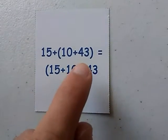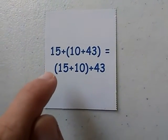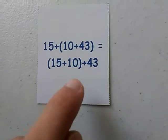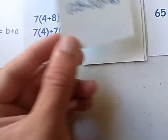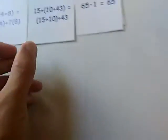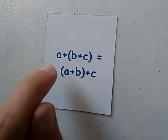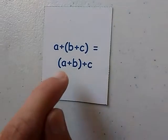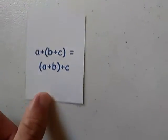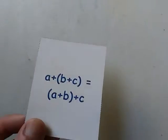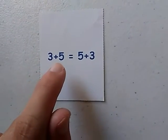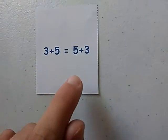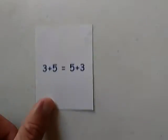10 plus 43 plus 15 equals 15 plus 10 plus 43. B plus C plus A equals A plus B plus C — this is the Associative Property of Addition with variables. 3 plus 5 equals 5 plus 3; they both equal 8, so this is the Commutative Property of Addition.